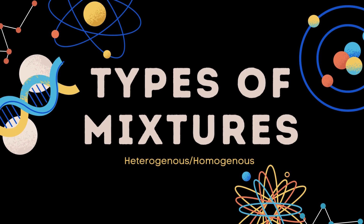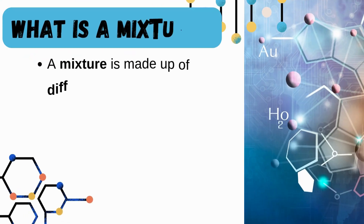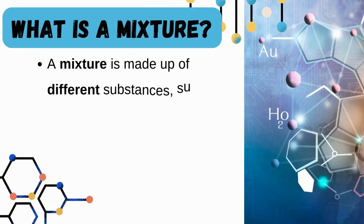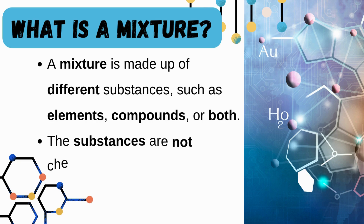This video reviews the types of mixtures: heterogeneous and homogeneous. A mixture is made up of different substances, such as elements, compounds, or both, and these substances are not chemically bonded.